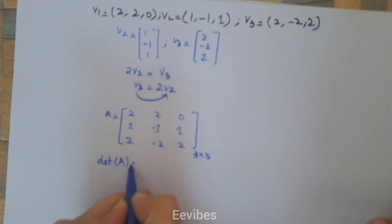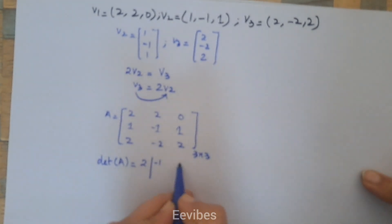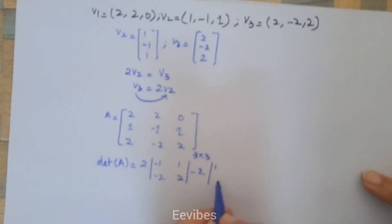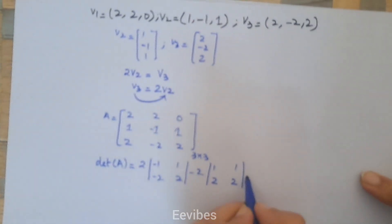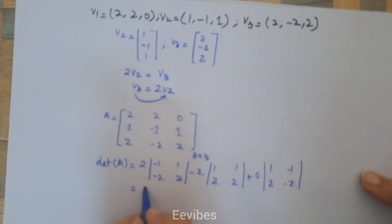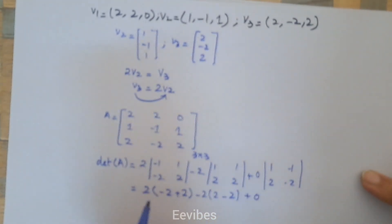The determinant of A will be—let's expand from the first row. We have 2 times [(-1)(2) - (1)(-2)], minus 2 times [(1)(2) - (1)(2)], plus 0 times [(1)(-2) - (-1)(2)]. So, 2 times (-2 + 2) minus 2 times (2 - 2) plus 0, because any multiple of 0 will result in 0.